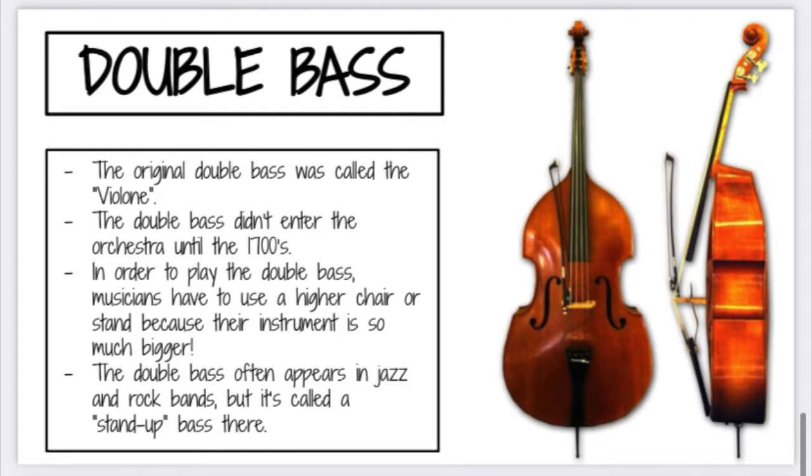Now we're going to talk about an even bigger string instrument — it's called the double bass. Here's a picture. The double bass did not get into the orchestra really until the 1700s, and this instrument is huge. You have to stand to play it, or sometimes you can sit on a stool — it's way taller than I am. The double bass often appears in rock and jazz bands, where it's called a stand-up bass. It's so tall you have to hold your arm up and bow it just like this. It plays the lowest of all the instruments we've talked about so far.